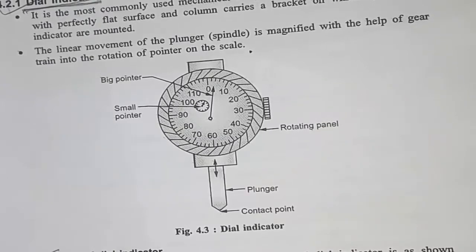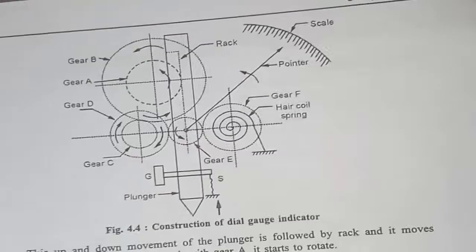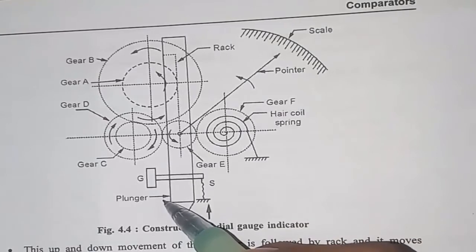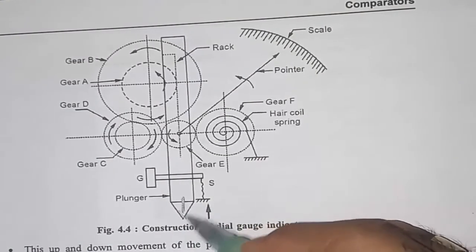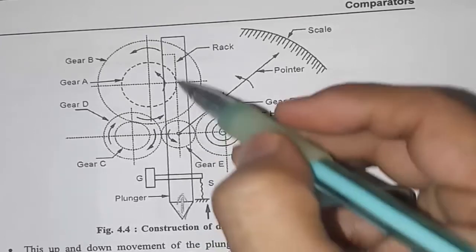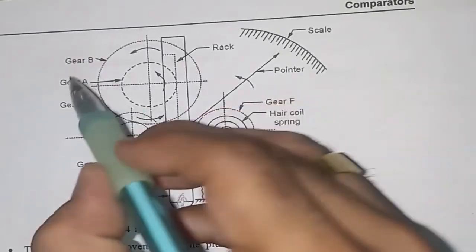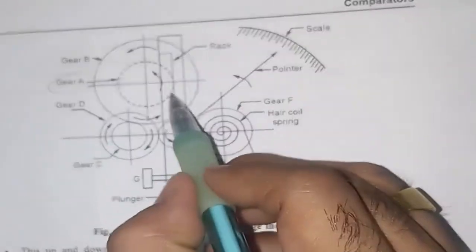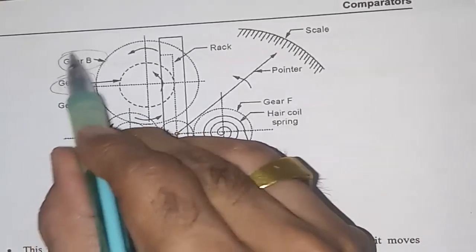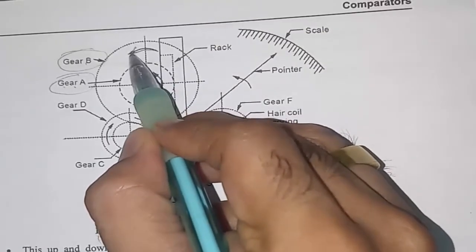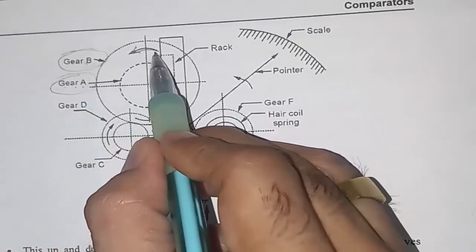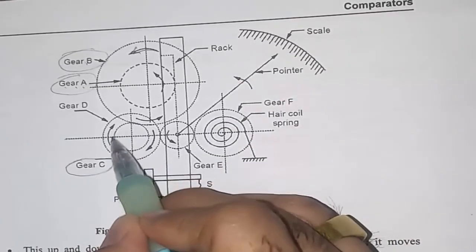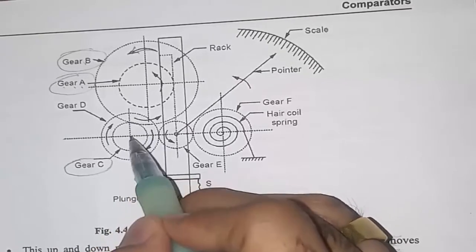Looking at the working of the dial indicator: as the plunger moves, it drives Gear A to rotate. Gear A and Gear B are a compound gear, so they share the same rotation. Gear B then connects with and rotates Gear C.